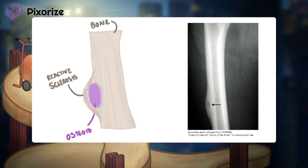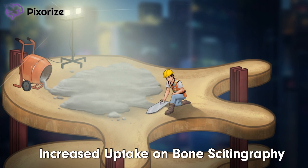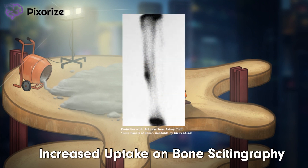While on imaging, I also want to mention bone scintigraphy. Bone scintigraphy is a nuclear medicine technique in which radioactive tracer is found at sites of bone turnover. Since osteoid osteoma and osteoblastoma are tumors of osteoblasts, expect them to show increased uptake on bone scintigraphy. This is easy to reason through, so don't spend time memorizing it.